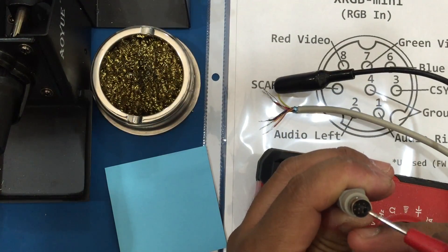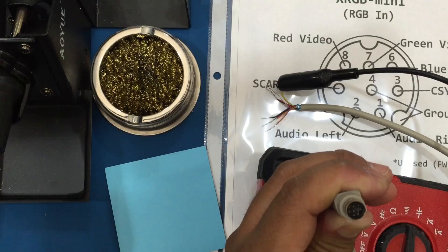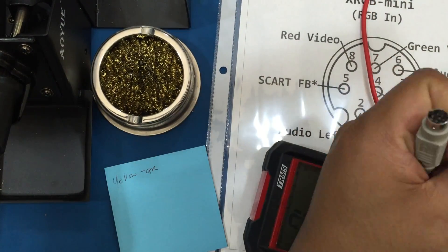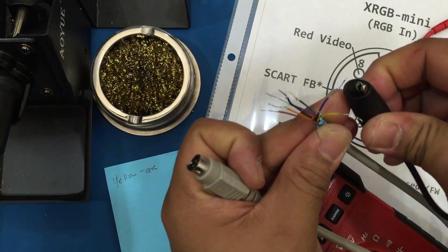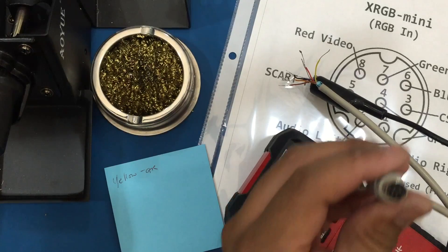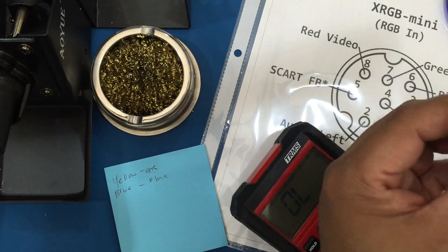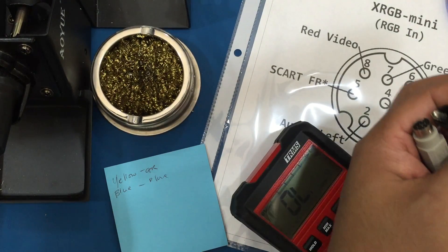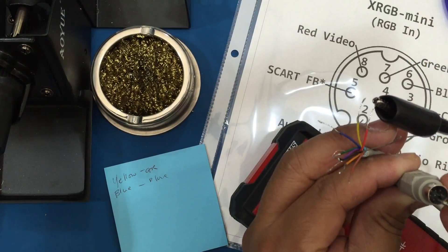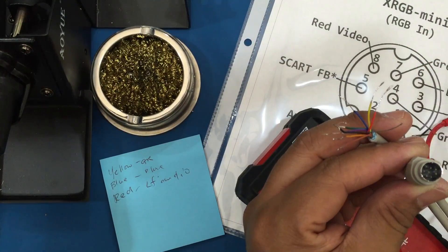Looks like the yellow wire is gonna be our ground pin. Okay we have a blue wire here. Looks like it's blue video. Let's check this red wire. And just do this for the rest of the wires.